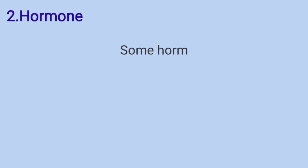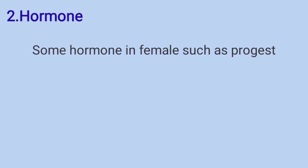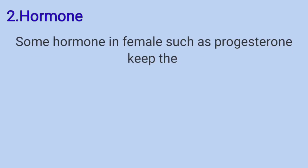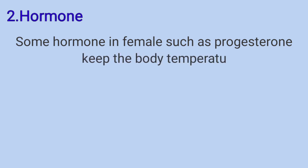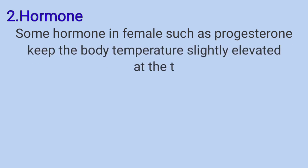The second one is hormone. Some hormones in females, such as progesterone, keep the body temperature slightly elevated at the time of ovulation.